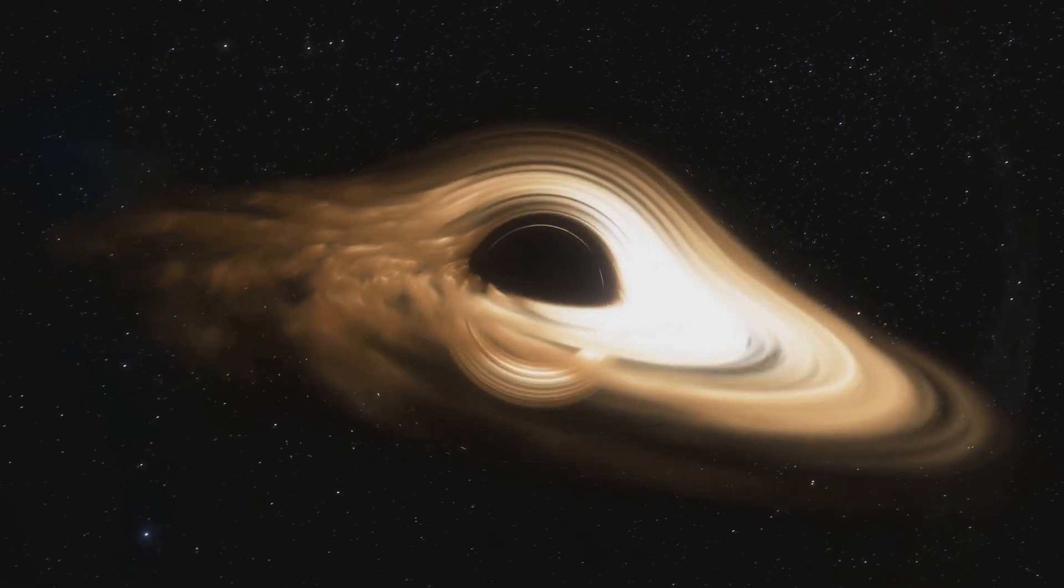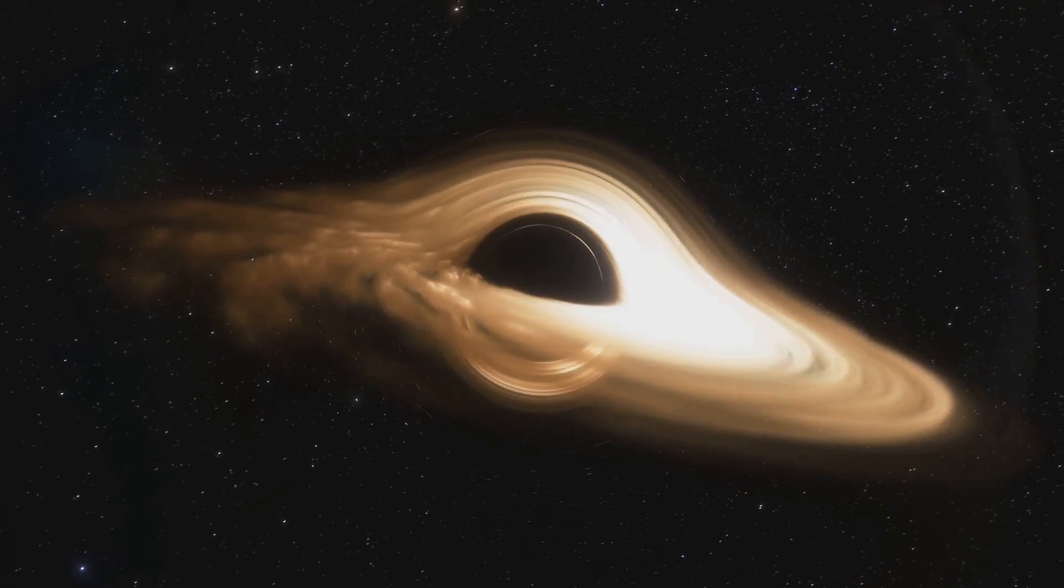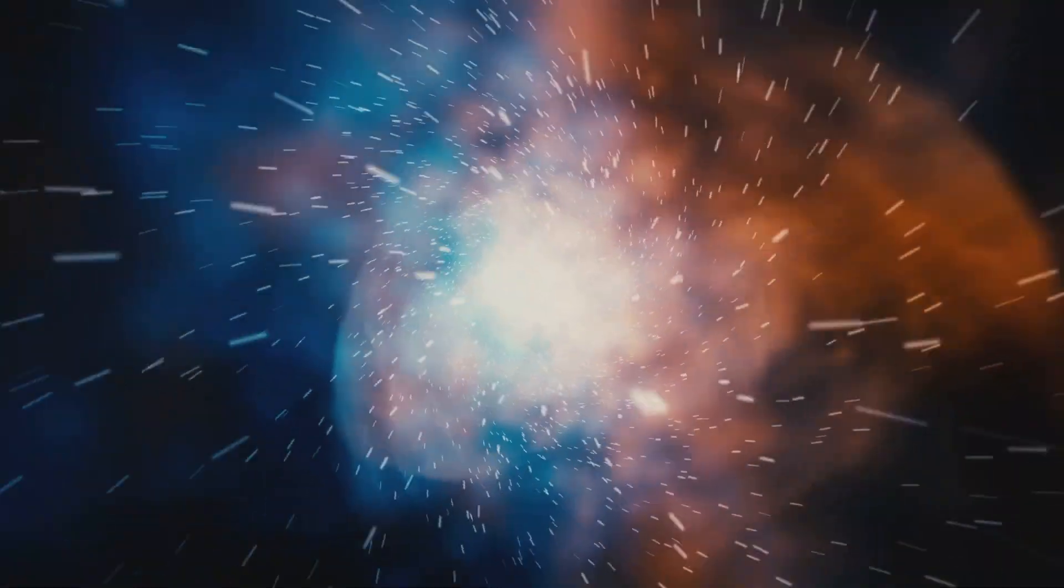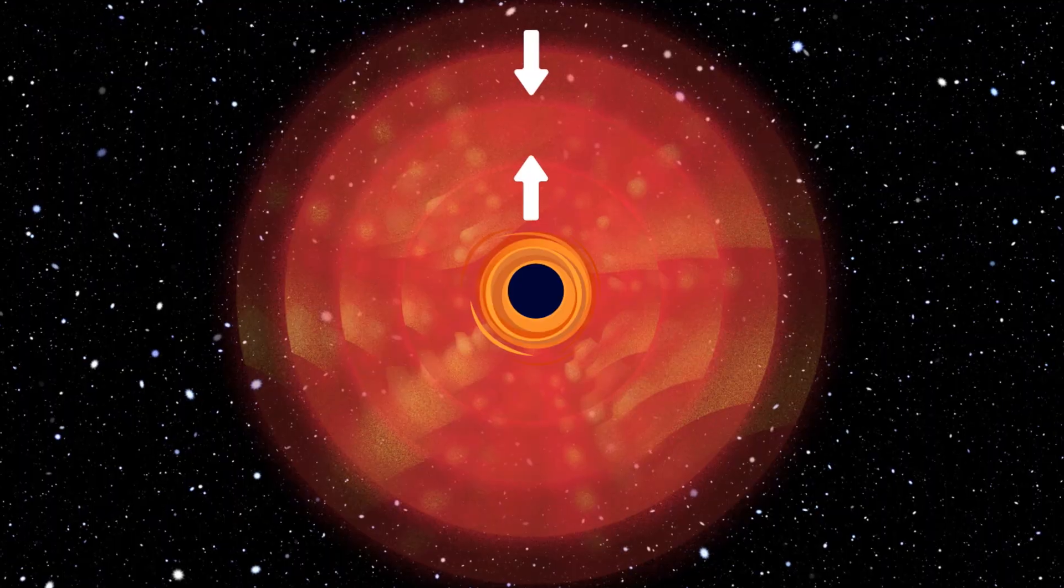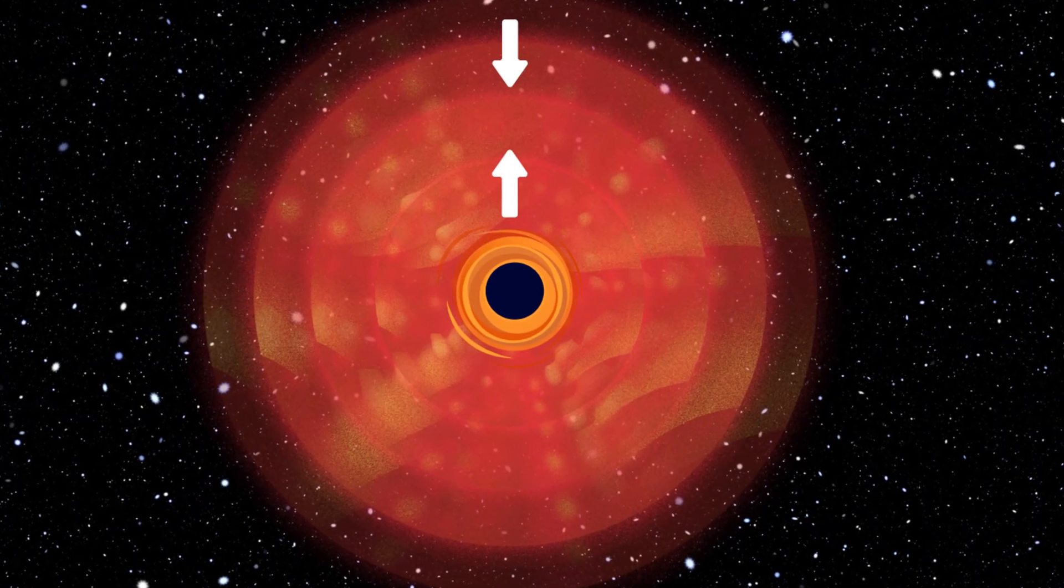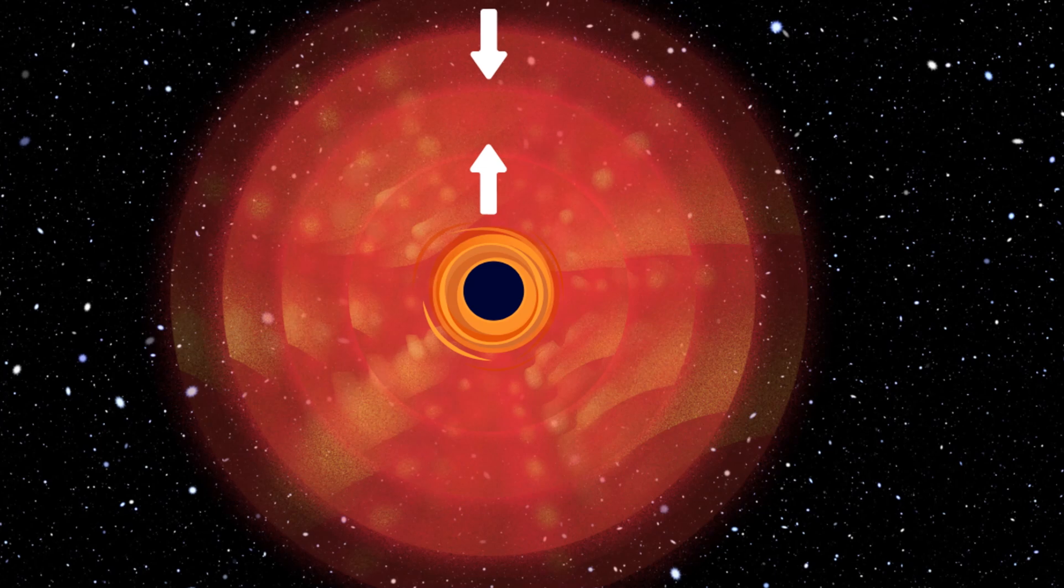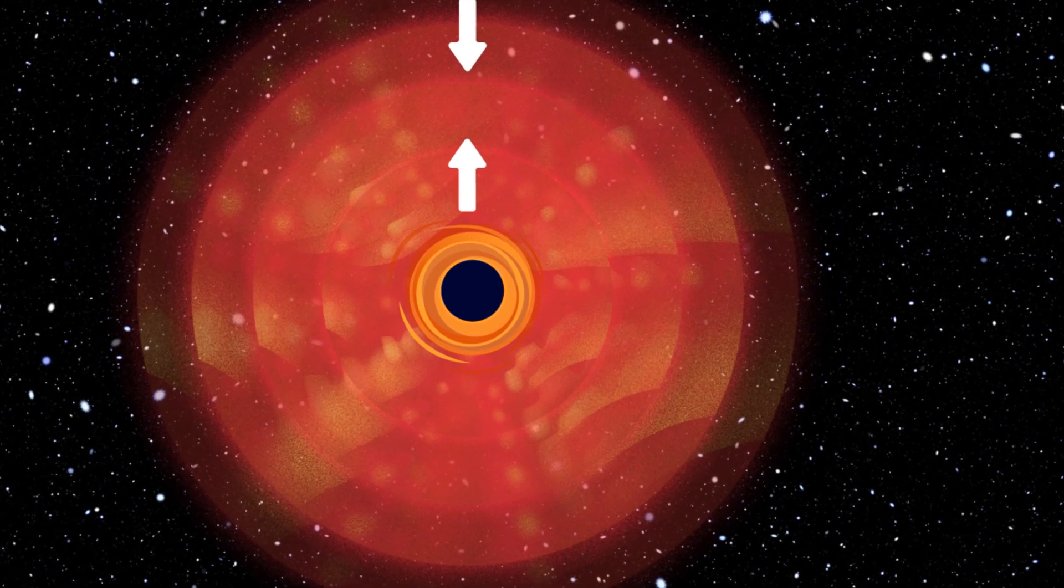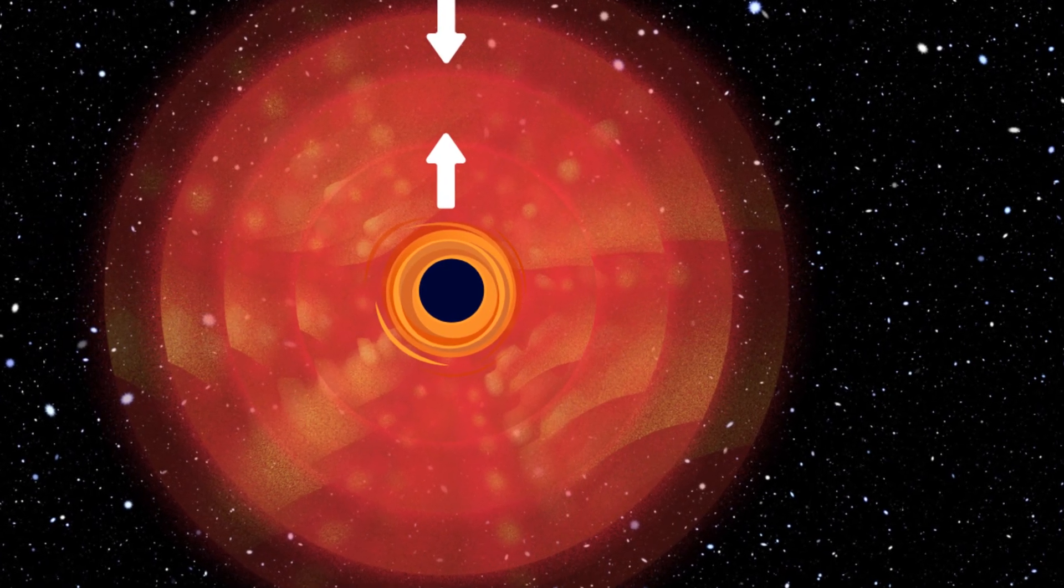As the black hole forms at the center, it starts feeding on matter from the surrounding star. As this matter falls in, it heats up to extreme temperatures, releasing incredible amounts of energy in the form of radiation. This energy creates pressure and pushes outward, holding the outer layers of the star in place, just long enough for the quasi-star to exist for a brief moment in the cosmic sense.